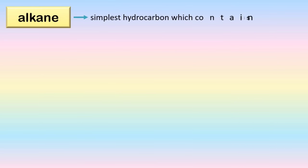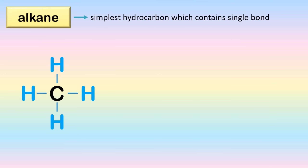Alkanes have only single bonds between carbon atoms and they are called saturated hydrocarbons. Alkenes have at least one double bond carbon to carbon. Alkenes and alkynes are called unsaturated hydrocarbons. Now let's start with alkanes — these are the simplest hydrocarbons which consist of single bonds of carbon to carbon. A single carbon atom can bond to four hydrogen atoms to become stable. Carbon can bond with itself; for example, carbon bonded to another carbon. Since carbon already shares one valence electron with another carbon, how many hydrogen atoms do we need for the first carbon to become stable?